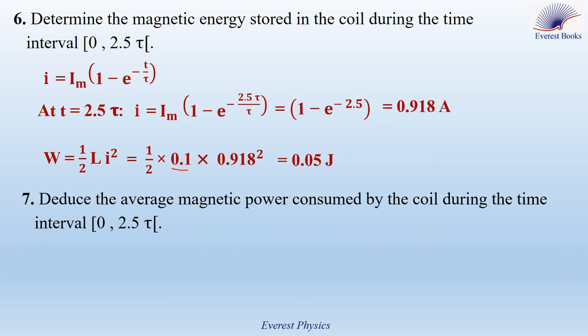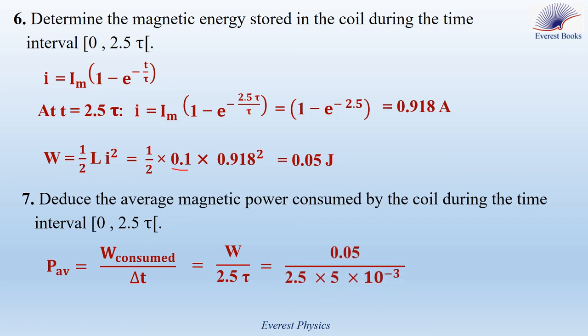Part 7: deduce the average magnetic power consumed by the coil during the time interval 0 to 2.5τ. The average power is given by P_average equal to W_consumed over ΔT. W consumed is 0.05 joules and ΔT is equal to 2.5τ. Replacing W and τ by their values — W is 0.05 joules and τ is 5 times 10 to the power minus 3 seconds — the average magnetic power consumed by the coil is equal to 4 watts.